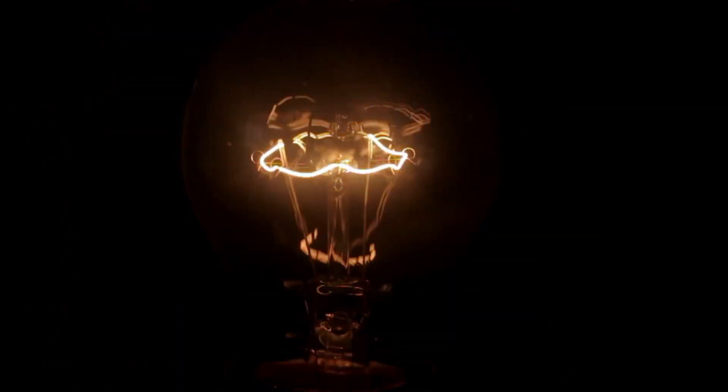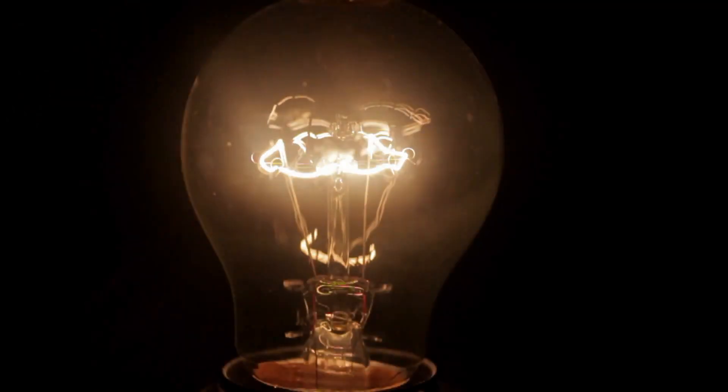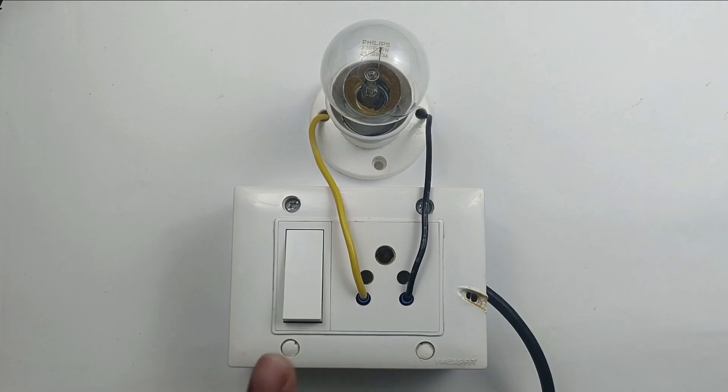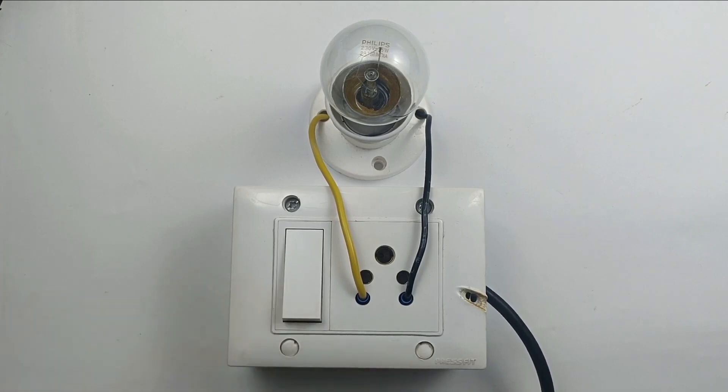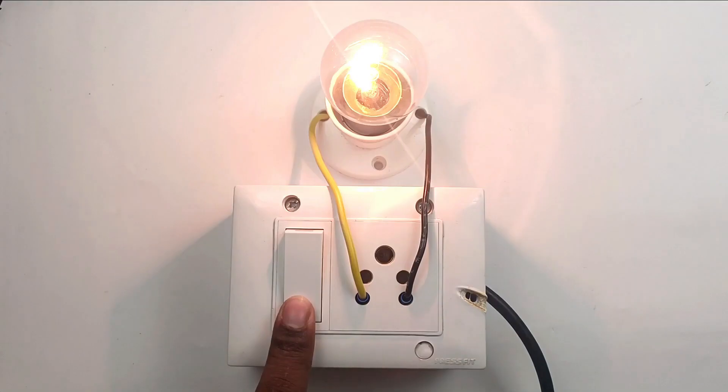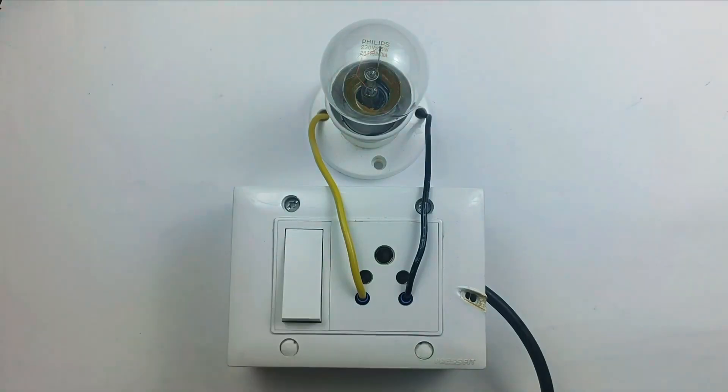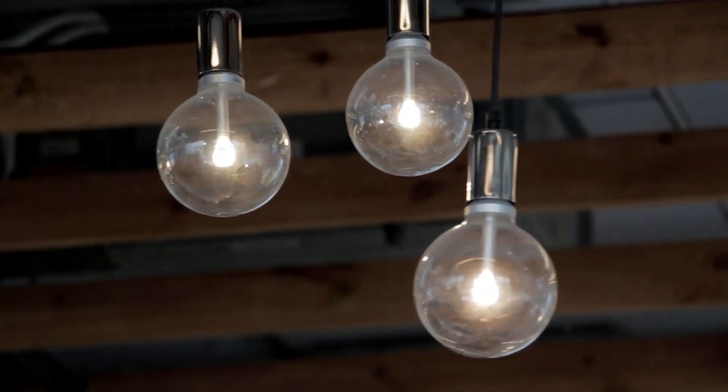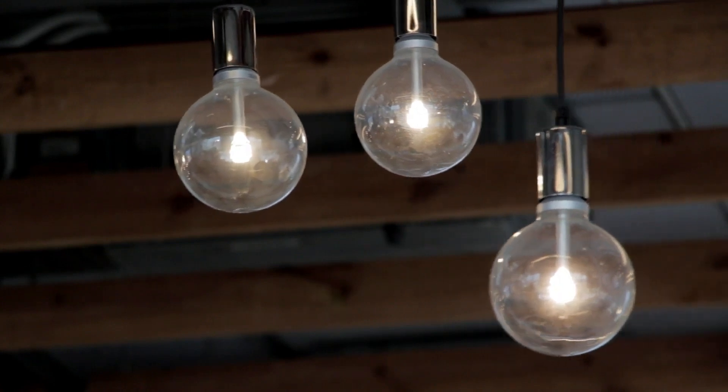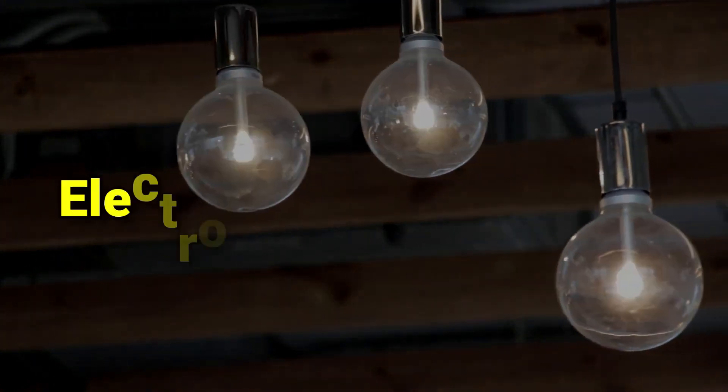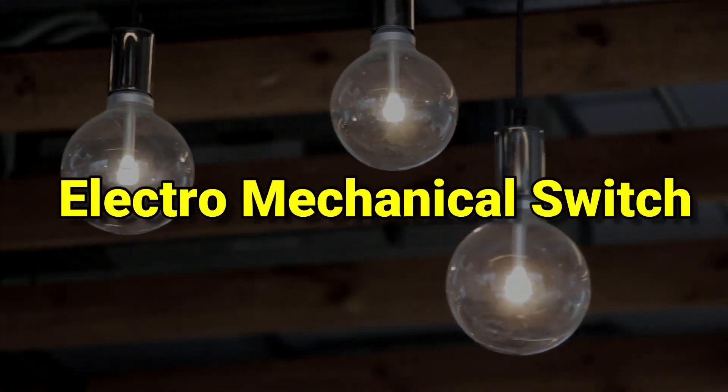After this, whatever the light is in your room, to turn on and off this light, we need a switch. Here, you cannot use a normal switch. The normal switch you generally use in your home needs to be switched on and off manually. If you want that the light in your home gets turned on and off automatically, then you need an electromechanical switch.